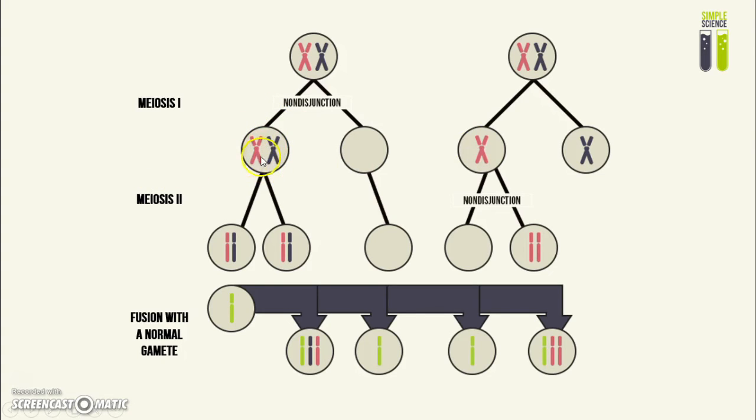Later on in meiosis II, this process happens normally. However, because of the previous error, you end up with two diploid gametes that contain double the number of chromosomes they're supposed to have,